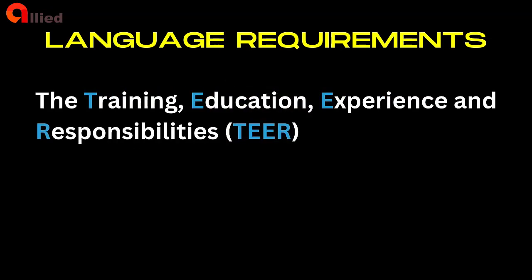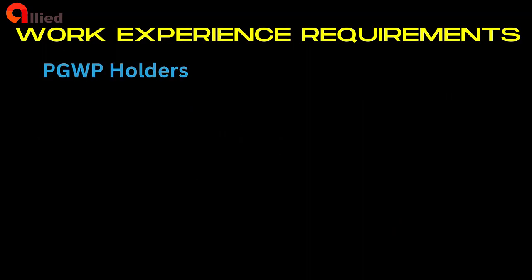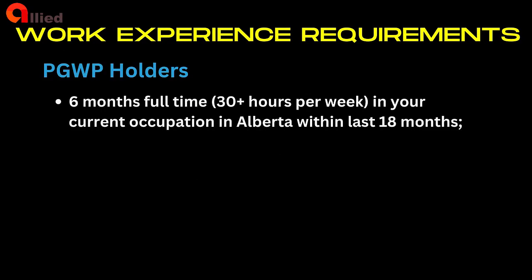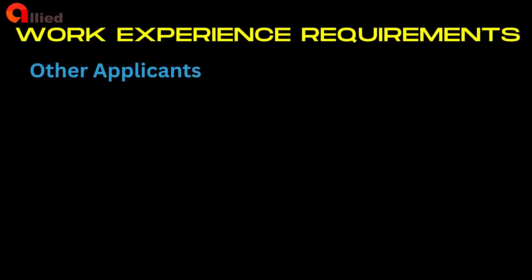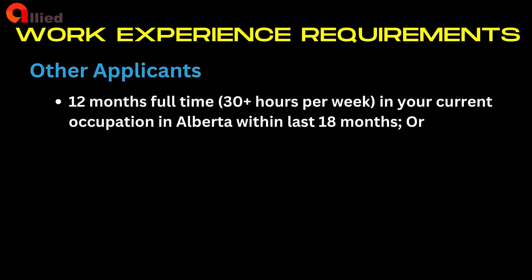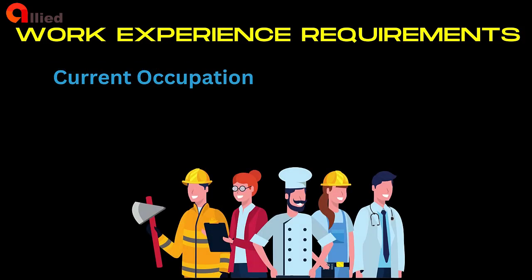Work experience requirements: Post-Graduation Work Permit holders require a minimum of six months full-time work experience in their current occupation in Alberta within the last 18 months, and the occupation must be related to their field of study in Alberta. All other applicants must have either a minimum of 12 months full-time work experience in their current occupation in Alberta within the last 18 months, or a minimum of 24 months of full-time work experience in their current occupation in Canada or abroad within the last 30 months, or both. Your current occupation is the occupation you are working in at the time your application is submitted.